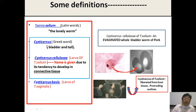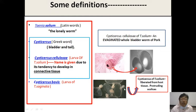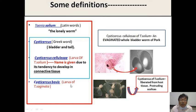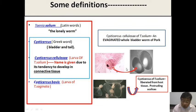Cysticercus is a bladder-like structure with a tail. It grows within the human body due to larval growth of Taenia solium, and when present in different organs we call it cysticercosis. Many use the term Cysticercus cellulosae — the larva of Taenia solium — named due to its tendency to develop in connective tissue. Cysticercus bovis is the larva of Taenia saginata.